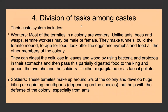Most termites in the colony are workers — the main caste. Unlike ants, bees, and wasps, termite workers can be male or female. They make tunnels, build the termite mound, look for food, protect eggs and nymphs, and feed the other members of the colony. They can digest cellulose in leaves and wood using specific bacteria and protozoa in their stomachs, then pass this partially digested food to the king, queen, nymphs, and soldiers — either regurgitated or as fecal pellets.